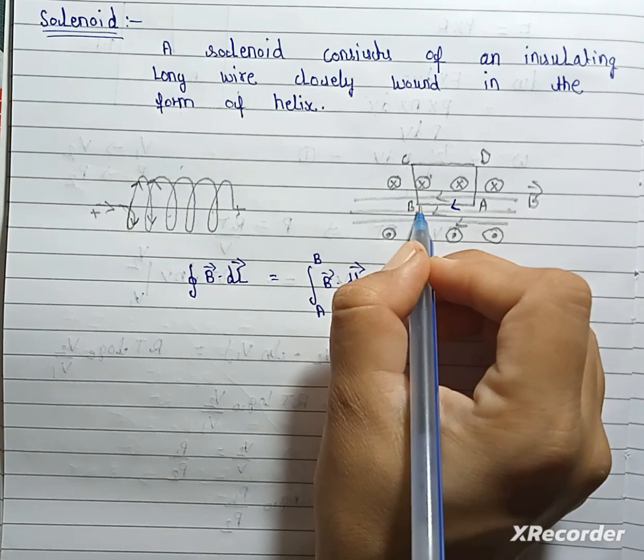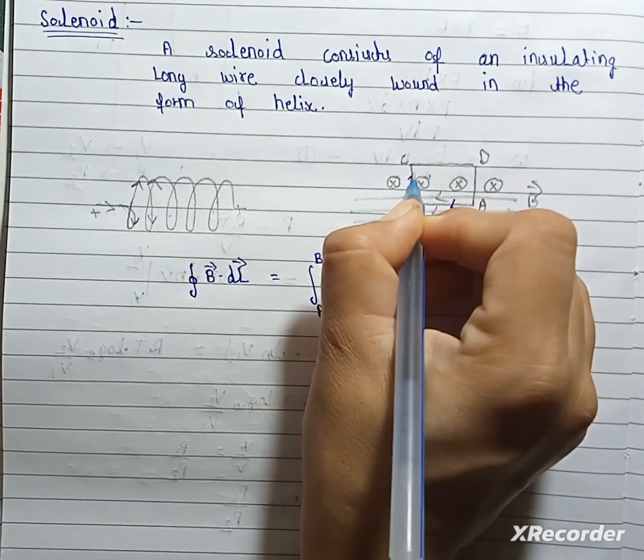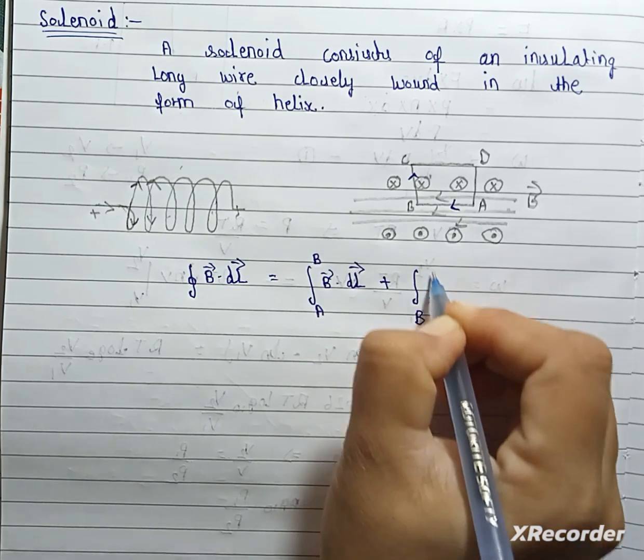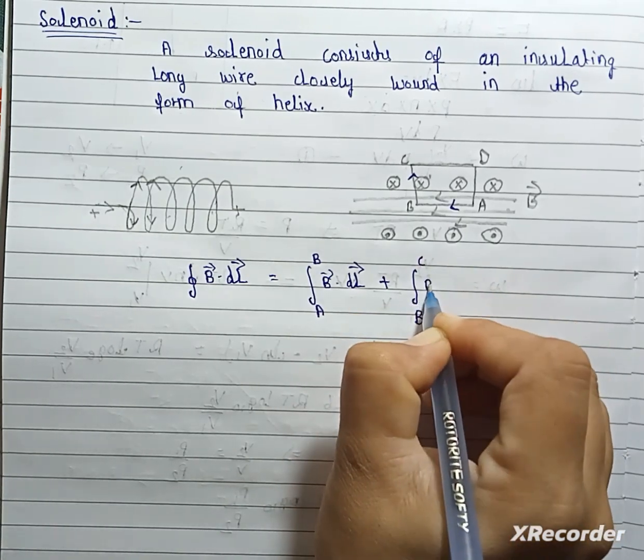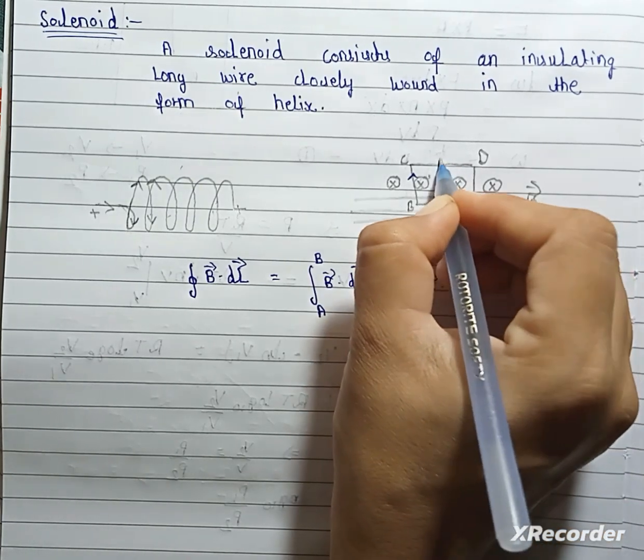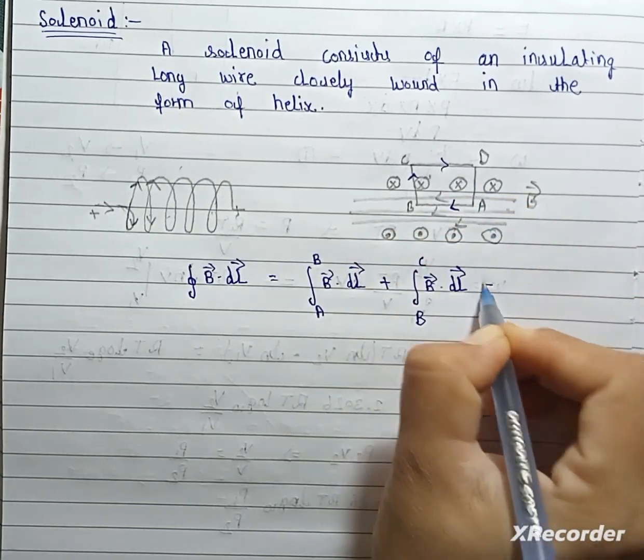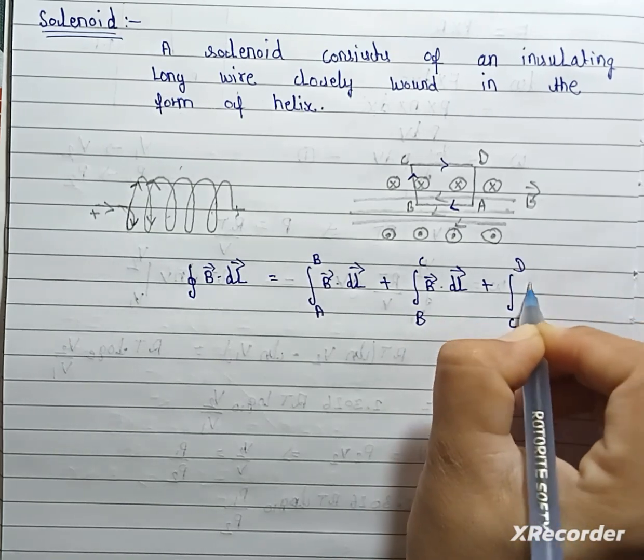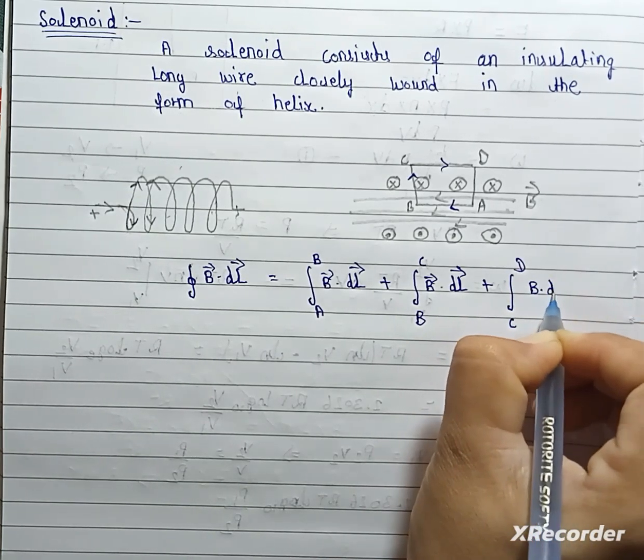Next is BC. B, C, B dot DL. Next is again for CD. C, D, B dot DL.